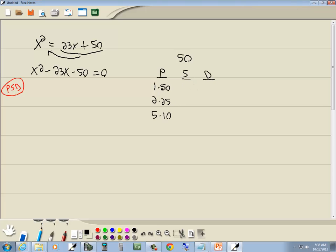The S column, we add them together. 1 plus 50 is 51. 2 plus 25 is 27. 5 plus 10 is 15. Difference column, we subtract them, smaller from larger. 50 minus 1 is 49. 25 minus 2 is 23. 10 minus 5 is 5.